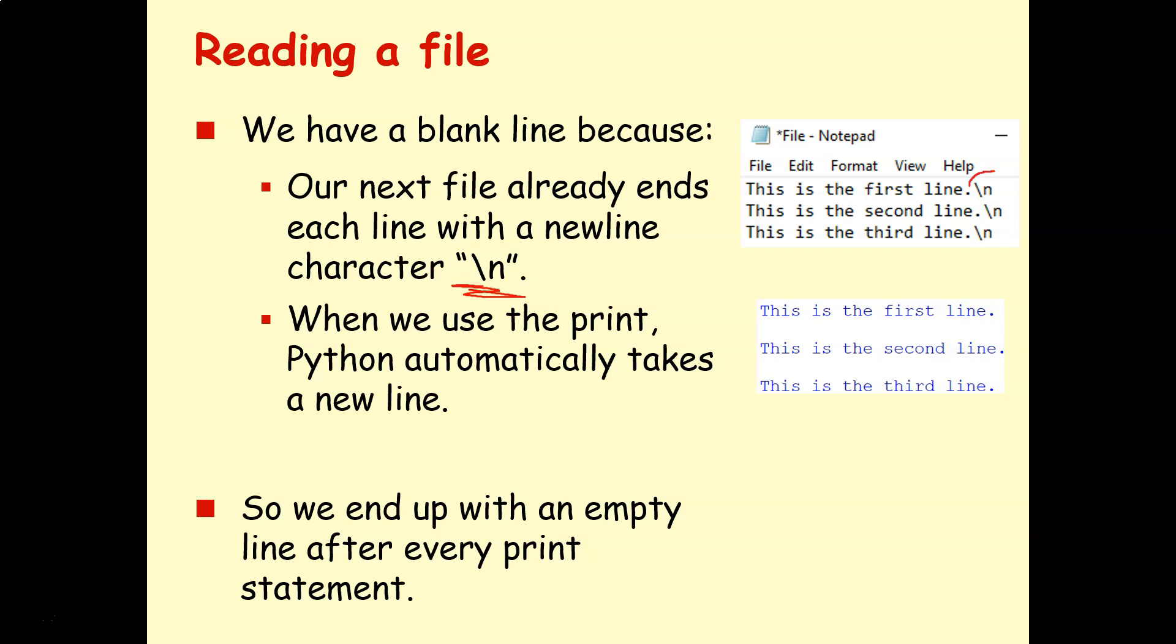Well, we have these blank lines because in our text file, each line already ends with a new line character, that slash n here. So you often can't see that it's kind of hidden symbol in your text editor. But this is basically how every line of your program ends. So every line of your text file ends, you've got this new line character. And then when we print in Python, Python automatically takes a new line. So basically, it's like having two new lines. You've got a new line here and a new line here, a new line here, and a new line here. So it's adding all these extra new lines in. So you have these empty blank lines after every print statement.